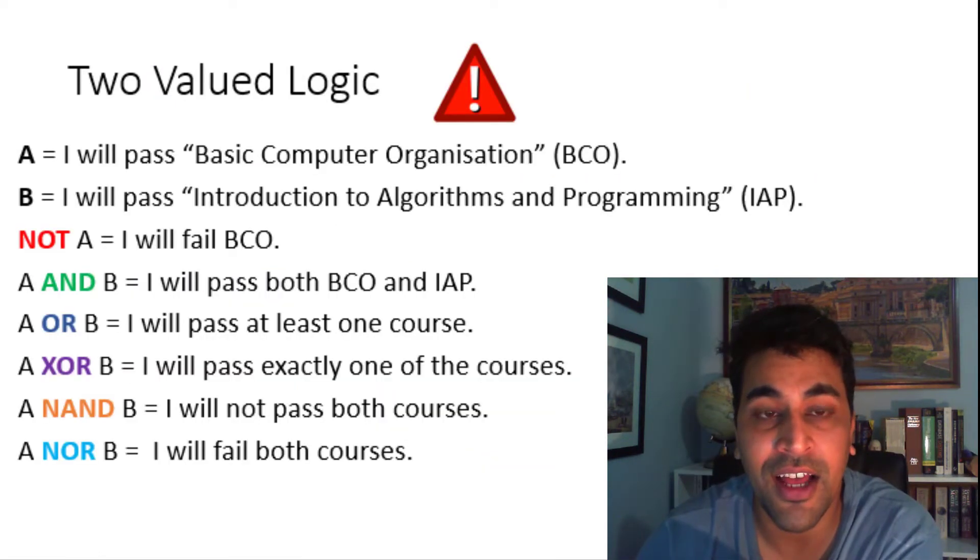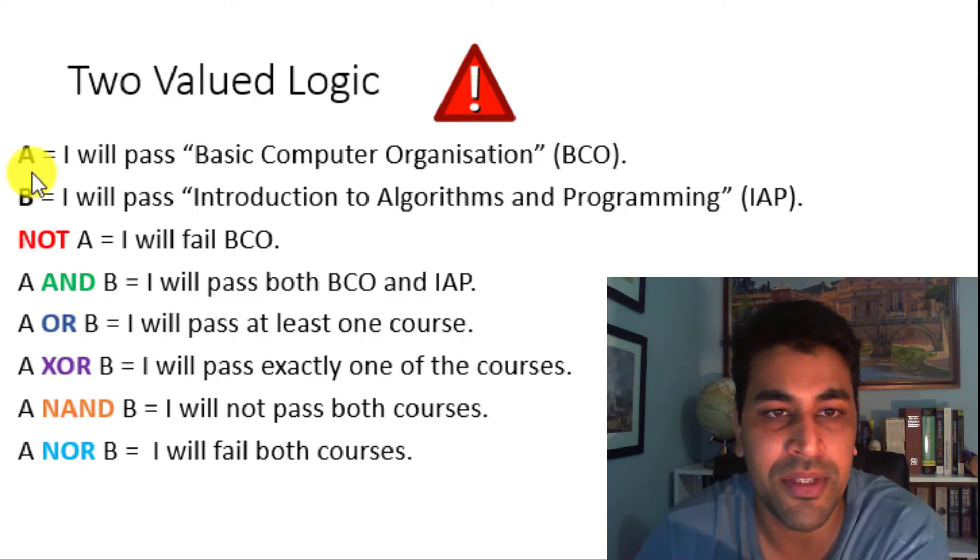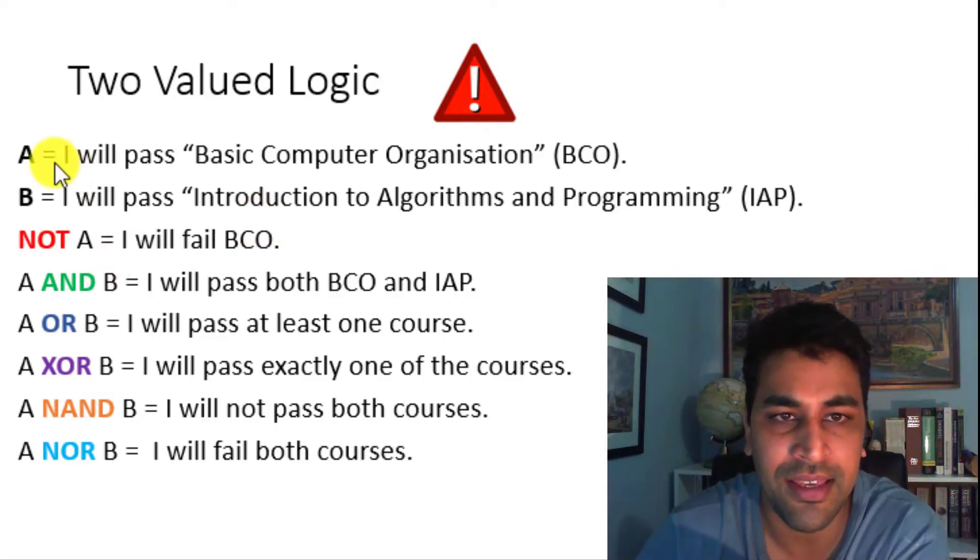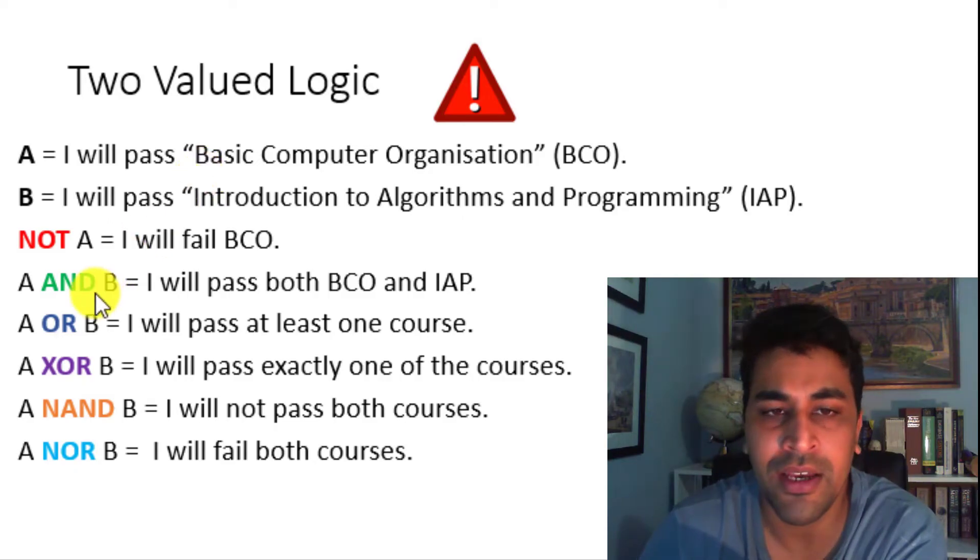Now that we understand how these gates would work on electric signals, let's try to parse two sentences into these gates and interpret the output. Suppose you've got two statements, A: I will parse BCO, and B: I will parse IAP. Then NOT A would be, I will fail BCO, since A is I will parse BCO. A and B would be, I will parse BCO and IAP.